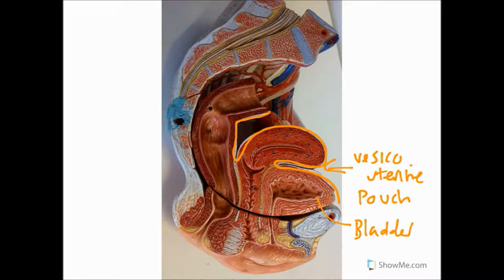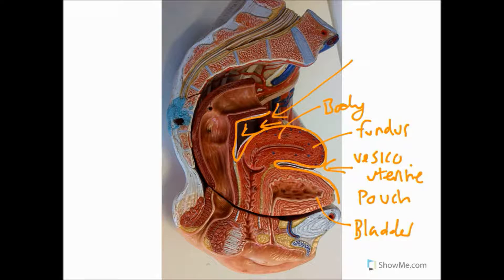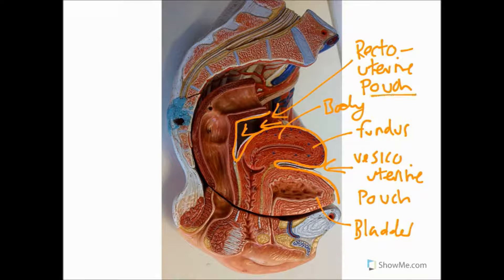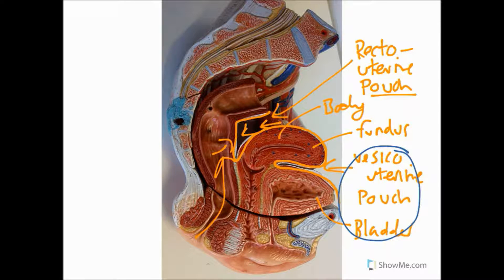We've also got the peritoneum stretching over the uterus — over the fundus and either side we have a body. As this peritoneum journeys back into this dark space, that is our recto-uterine pouch, also known as the pouch of Douglas. That's the important one because often if there is an infection inside the abdominal pelvic cavity, fluid or pus will gather in this region and can be palpated in a rectal examination. That makes it much more clinically important than the vesico-uterine pouch.